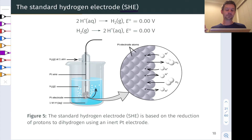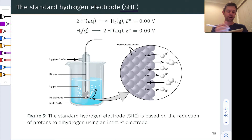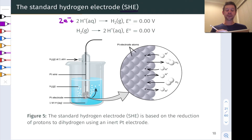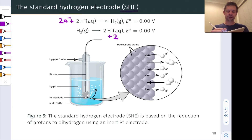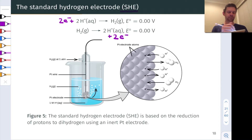The standard hydrogen electrode is called as such because the half reaction that occurs in this half cell involves the reduction of H⁺ to form H₂ — two electrons should be added here — or the oxidation of H₂ to two H⁺ and two electrons on the product side.